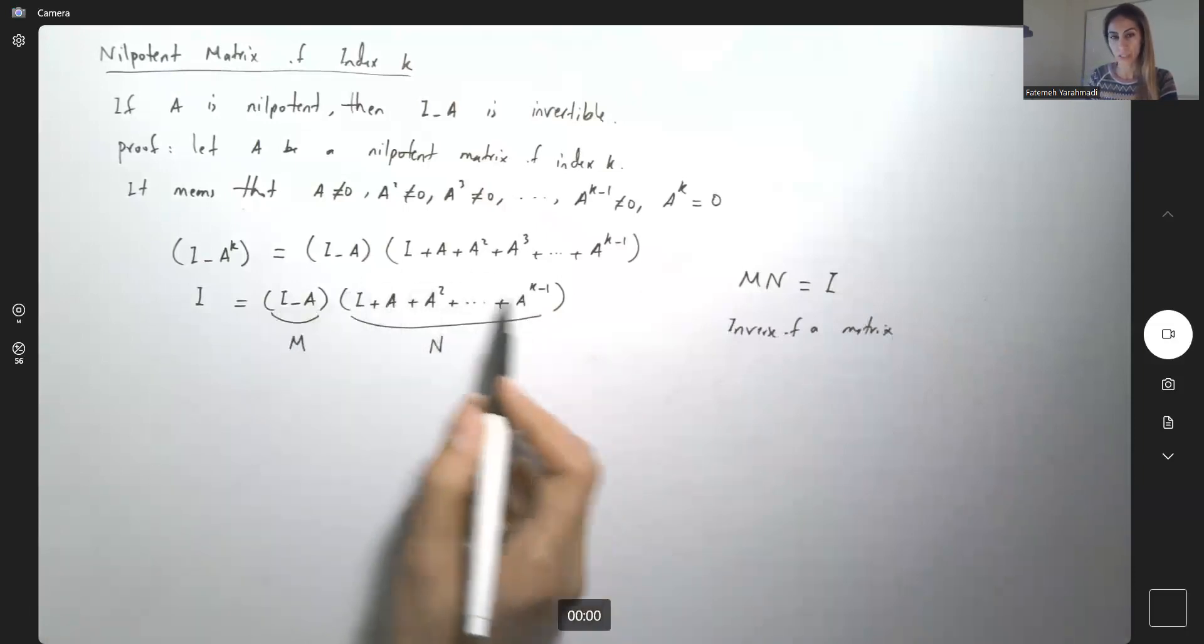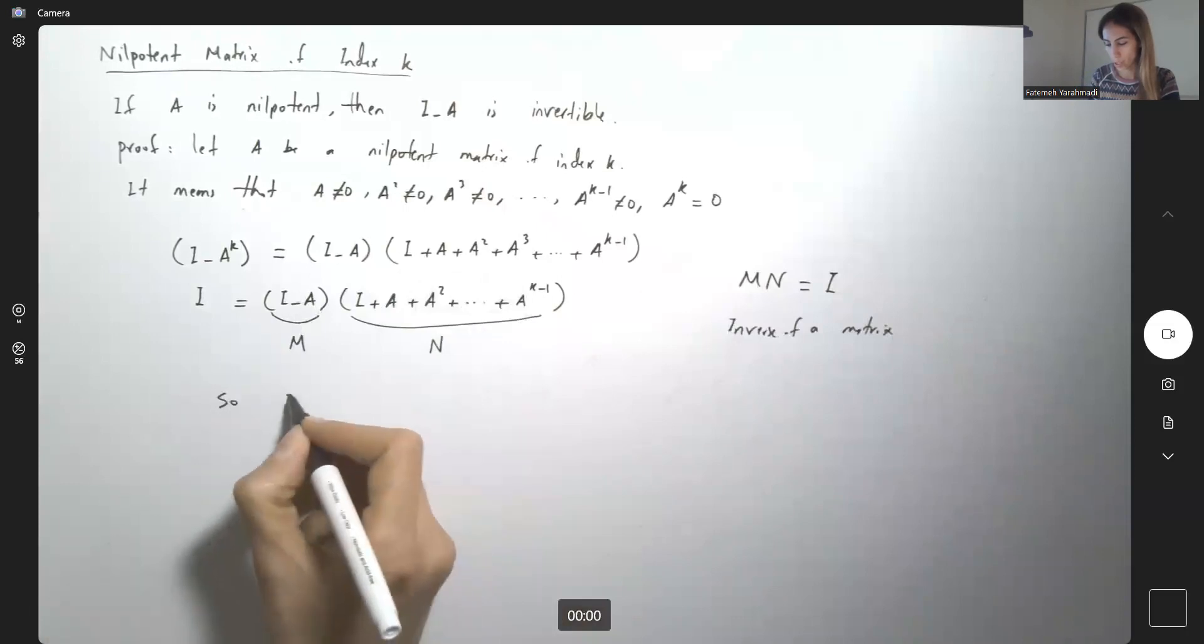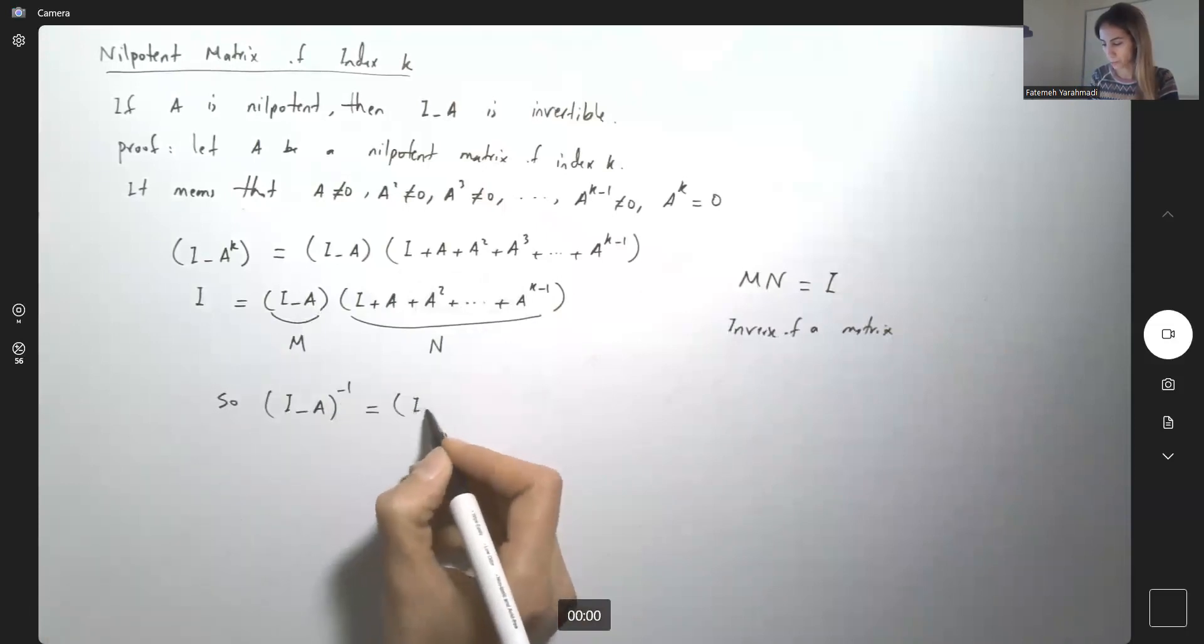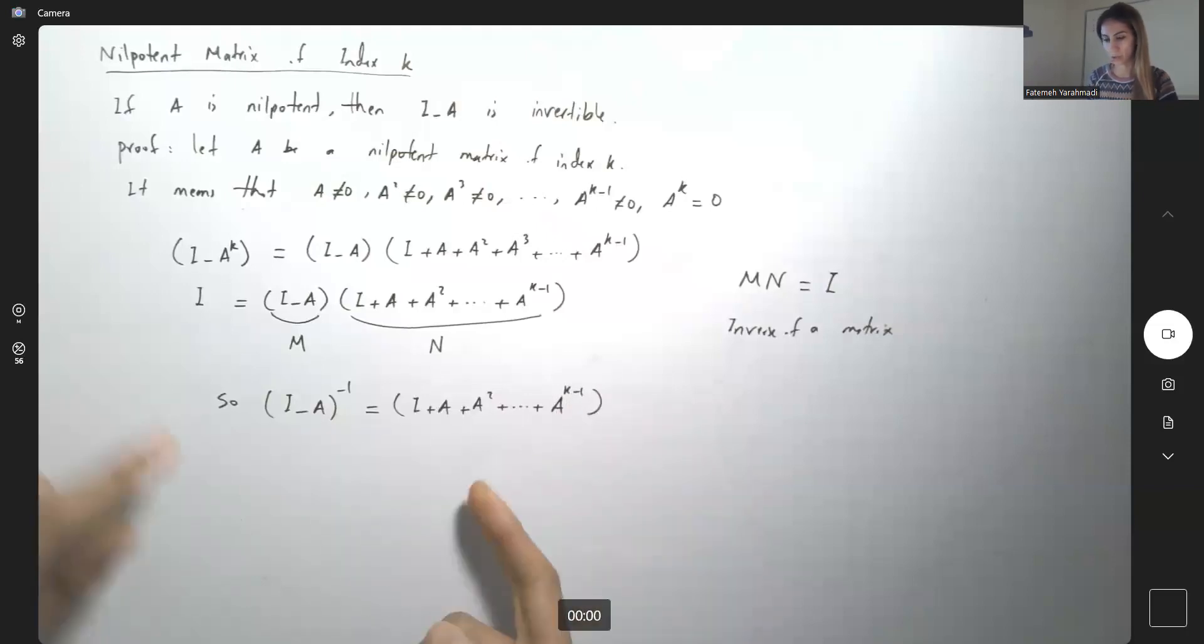So this matrix is the inverse of I minus A. So I minus A inverse is I plus A plus A squared plus A to power K minus 1. So we just proved that as long as A is nilpotent, then I minus A is invertible.